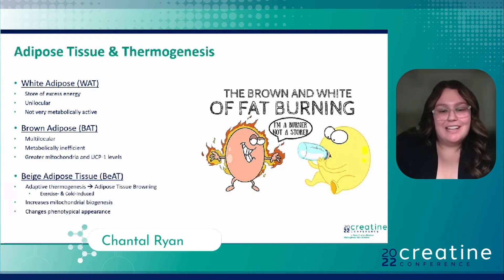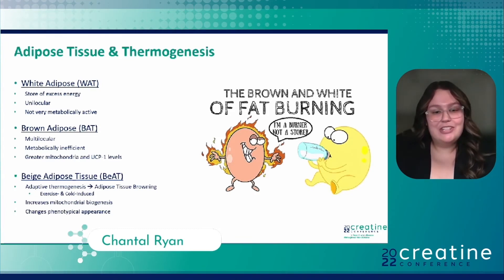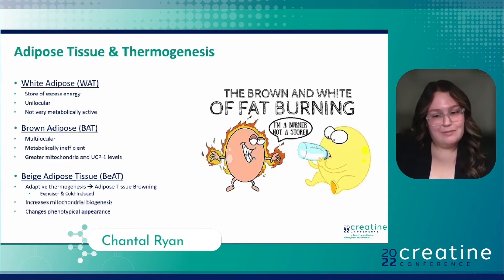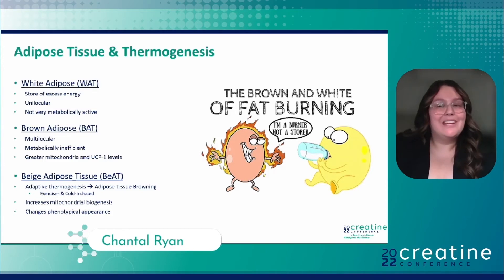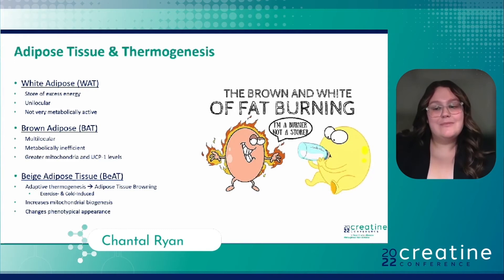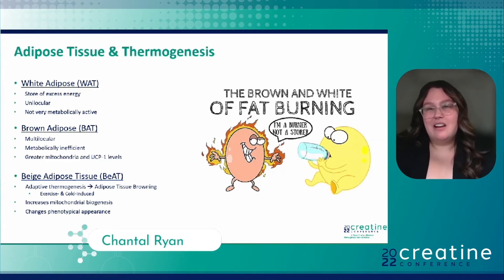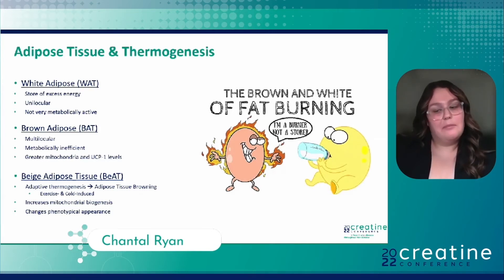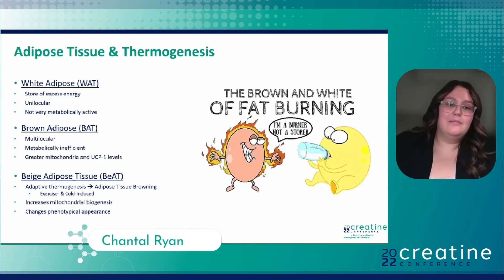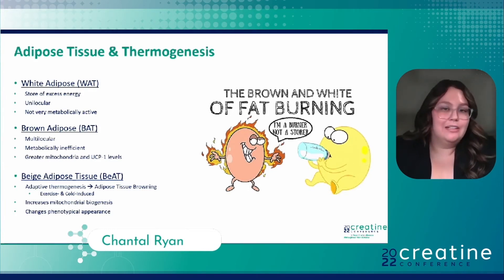There's actually a third form of adipose known as beige adipose tissue. If the metabolic activity of white and brown adipose tissue was part of a continuum, beige adipose tissue would lie somewhere in the middle between the two. This is because it's more metabolically active than white adipose tissue, although it's not as robust as brown adipose tissue. Beige adipose has some multilocular cells, but some adipocytes still remain unilocular.